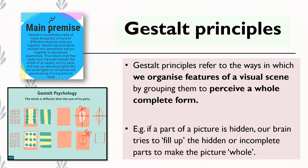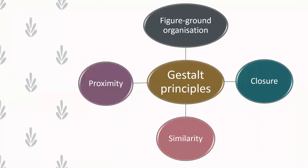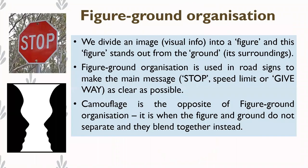Gestalt principles are about how our brain fills in certain bits of information or fills in gaps. Even if we're not shown a complete form of an image, our brain is smart enough to guess what that image could be. There are four main types: figure-ground organization, closure, similarity, and proximity.